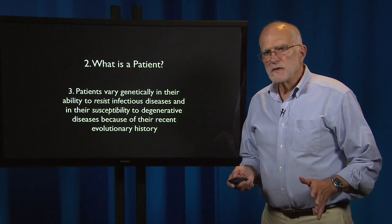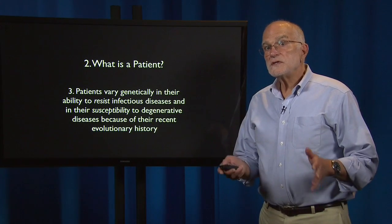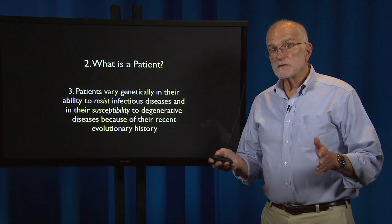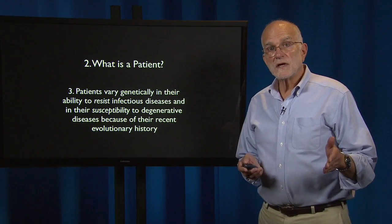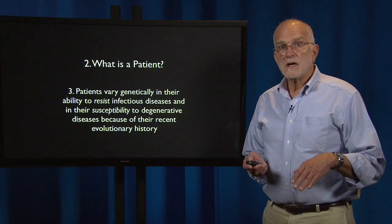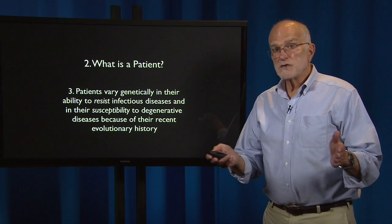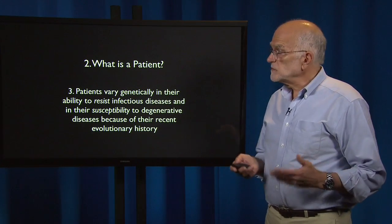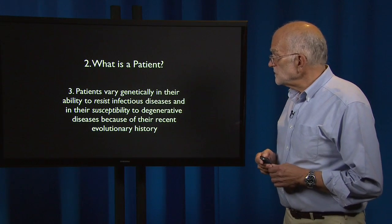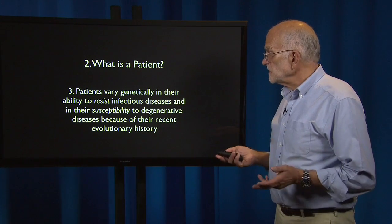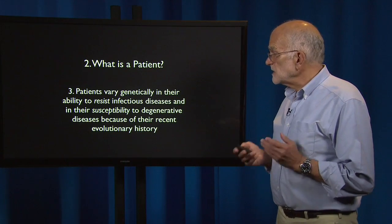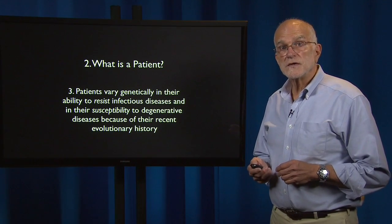As we saw in the last lecture, the recent history of humans is one of spreading across the planet and encountering different diets and different pathogens as they spread. They also changed for random reasons genetically. As a result, patients vary genetically in ability to resist infectious disease and in susceptibility to degenerative diseases because of this recent evolutionary history.